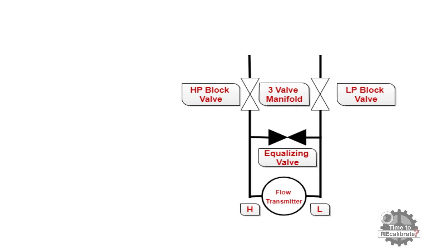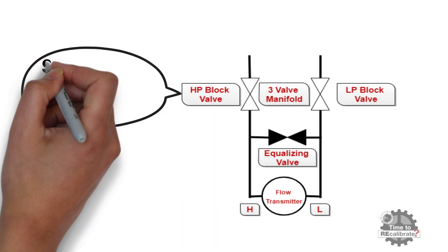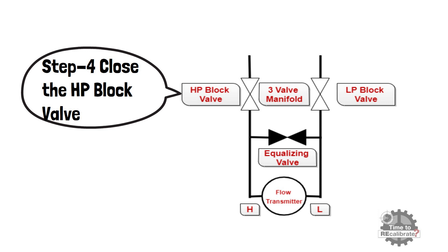In fourth or final step, close the HP block valve by rotating valve in clockwise direction. This will isolate the transmitter from the high side pressure. The transmitter has now been removed from service. In other words, once you have done with fourth step, you can remove transmitter without causing any damage to cell.